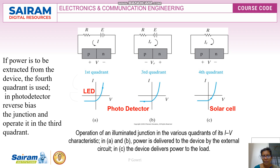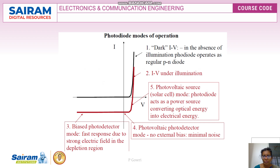When the device operates in the fourth quadrant, it functions as a solar cell. In the first and second cases, power is delivered to the device by the external circuit. In the third case — solar cell operation — power is delivered to the load. Based on the operating region, this photodiode has different applications.